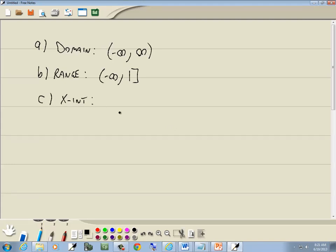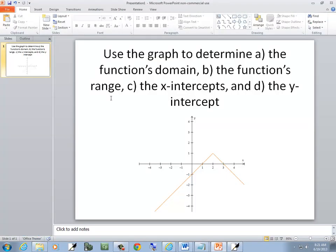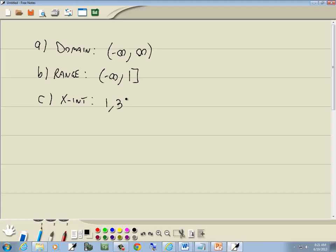Now our x-intercepts is where it crosses or touches the x-axis, which looks like 1 and 3. You could write it this way, 1, 3, or if you want to write it in point form, I don't have any problem with that. 1, 0, 3, 0.